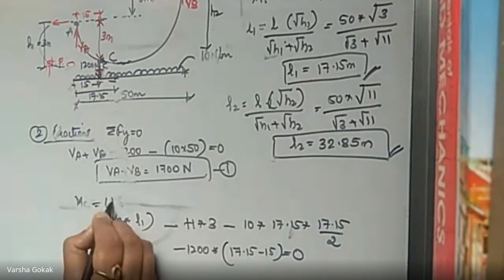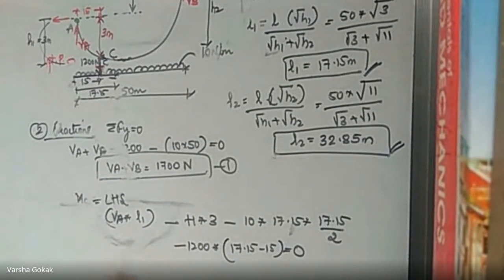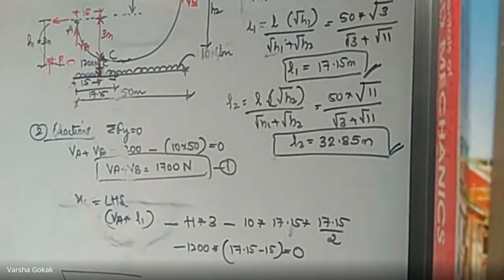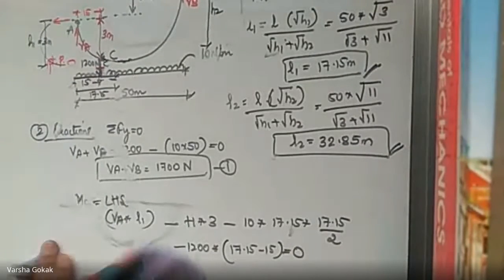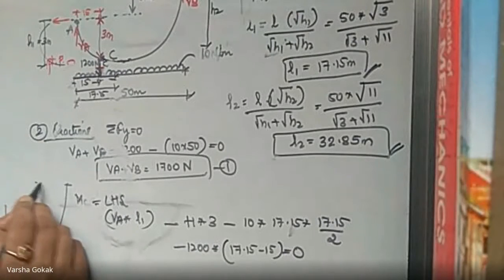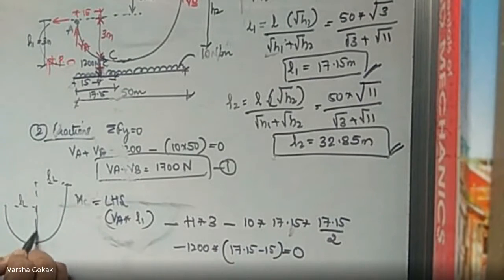Let me explain this equation again. VA into L1 goes clockwise, so it is positive. H, shown outward in the free body diagram, goes to C anti-clockwise, so minus H into 3. The UDL of 10 N/m acting over L1 equals 17.15 creates an anti-clockwise moment: minus 10 into 17.15 into 17.15 divided by 2.